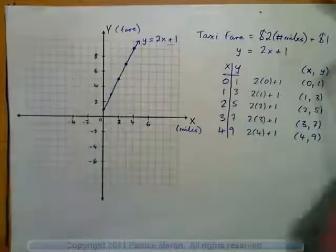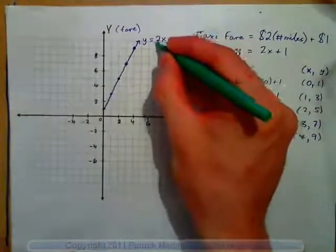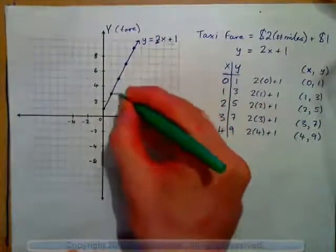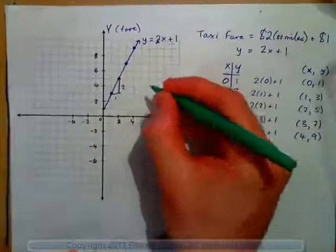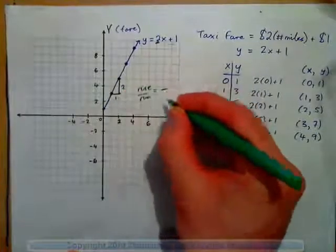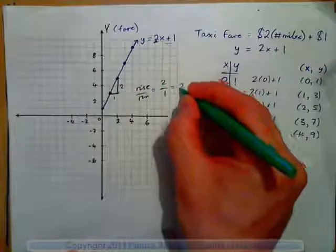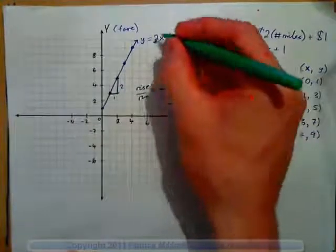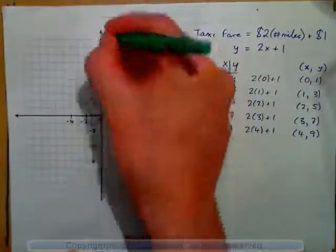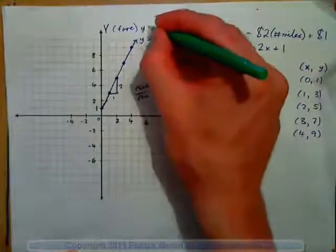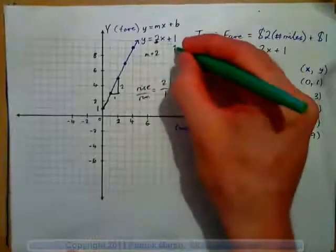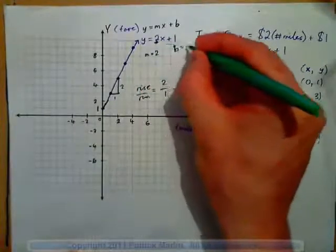Just to recap quickly: this 2 is the slope. Because to get from one point to the next, we run 1 and rise 2 — from left to right. The rise over the run is 2 over 1, which is 2. So this number is always the slope. And this number here, this 1, is the y-intercept — it's where the graph hits the y-axis. So this is y equals mx plus b, where slope m is 2 and y-intercept b is 1.